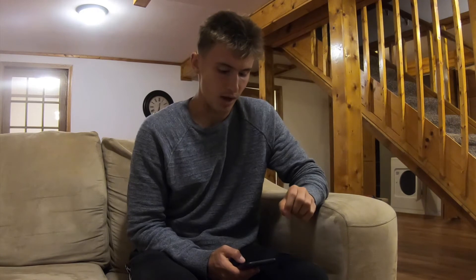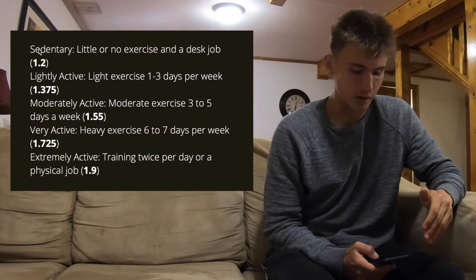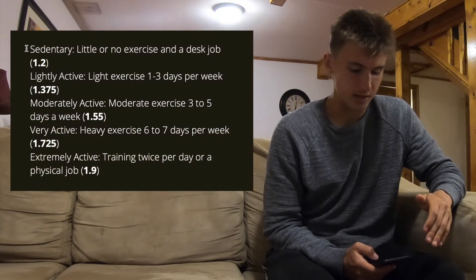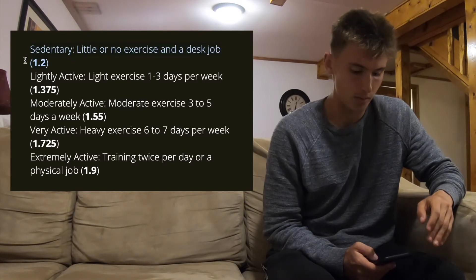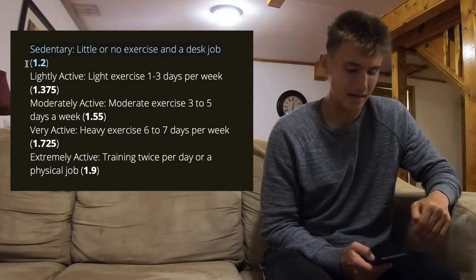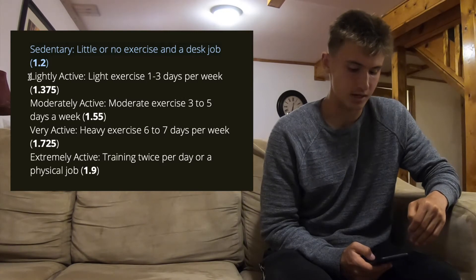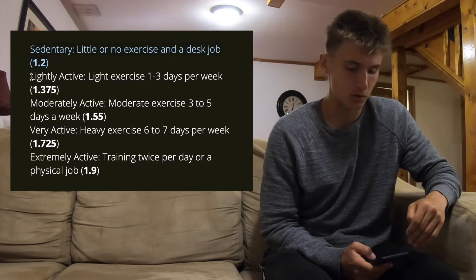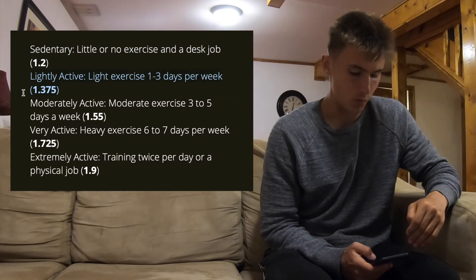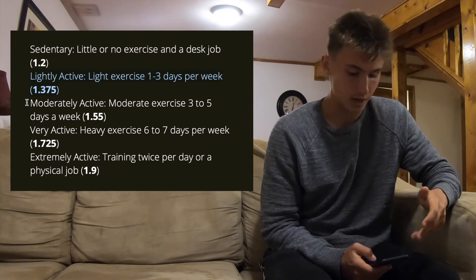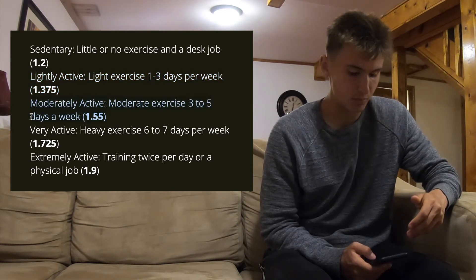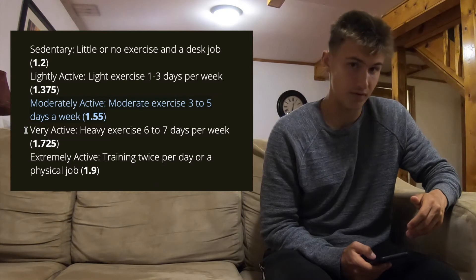Once you calculate your basal metabolic rate, you're going to want to multiply by a factor depending upon how active you are. If you are sedentary — little or no exercise and you work a desk job — multiply by 1.2. If you are lightly active, doing light exercise one to three days per week, multiply by 1.375. If you're moderately active, exercising three to five days a week, multiply by 1.55.